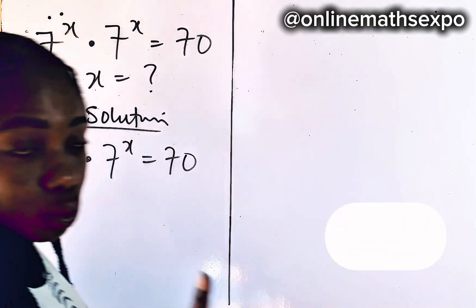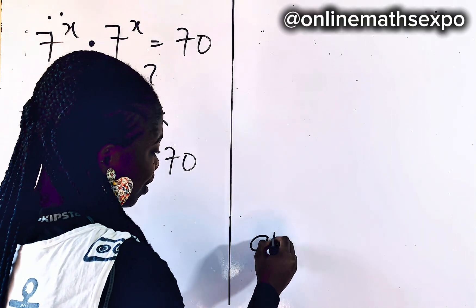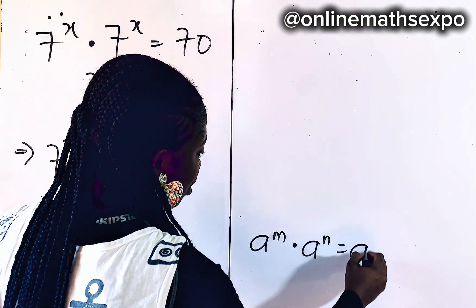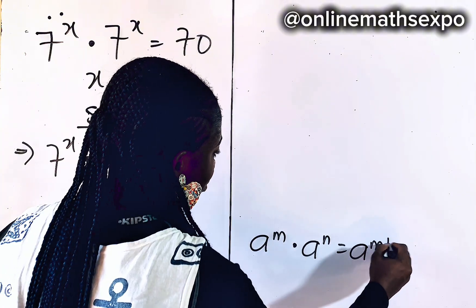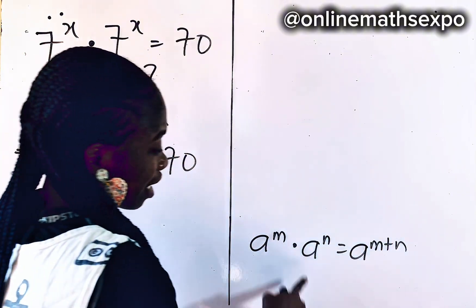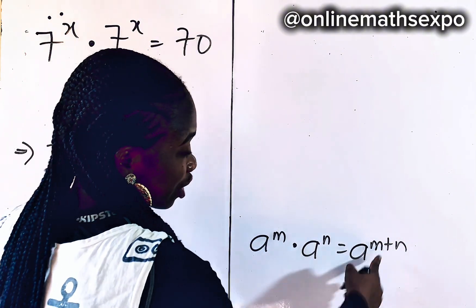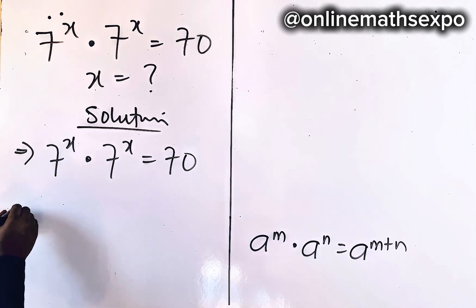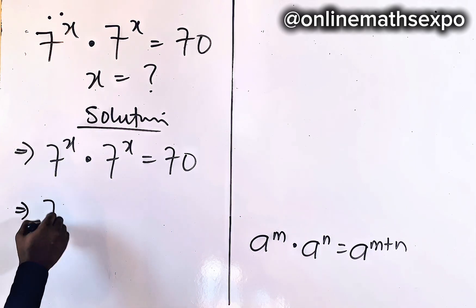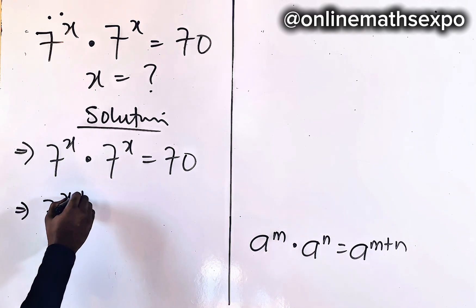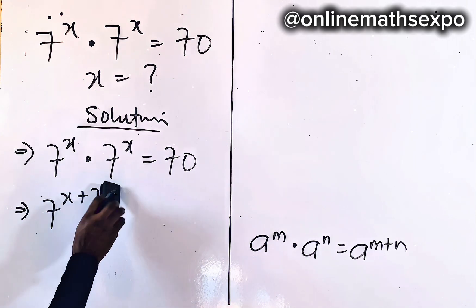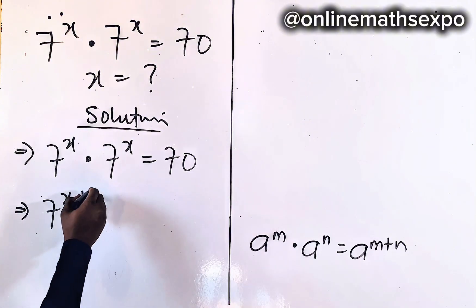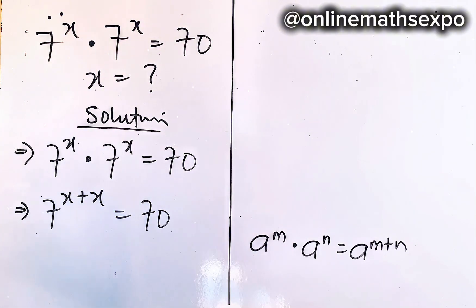Now, just quickly, a reminder: a to the power of m multiplied by a to the power of n is a to the power of m plus n. Multiplication turns to addition of powers. So apply it here — we have 7 to the power of x plus x, which is equal to 70.